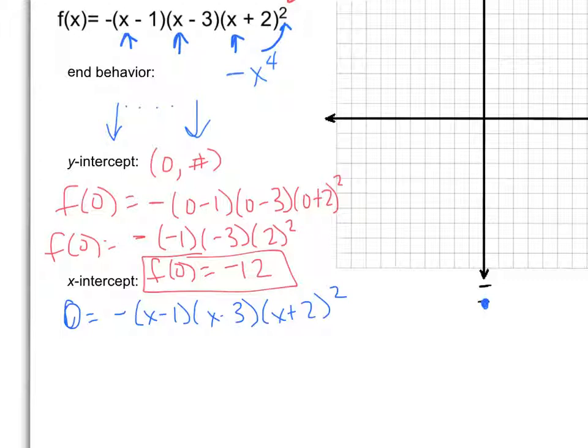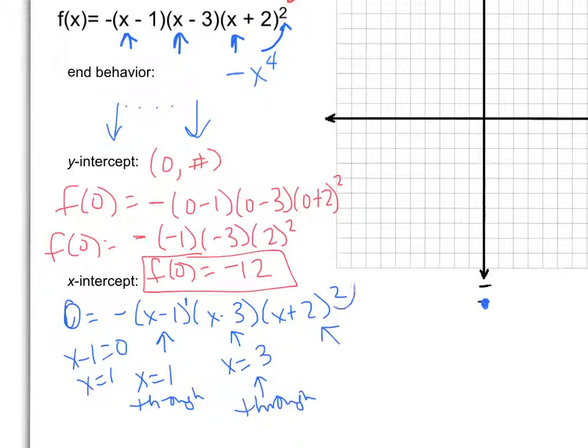The kicker to this problem is the fact that x minus 1 is to an odd exponent. It's to the first power. So whenever I have my point x equals 1, because remember you have x minus 1 equals 0, when you add 1 to both sides you get x equals 1. So when I have the point x equals 1, it's going to go through that axis. When I have the point x equals 3, again it's going to go through. But over here with the multiplicity of 2, I have x equals negative 2, and that's just going to touch, because it's a multiplicity of 2.